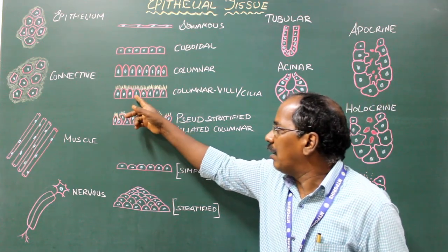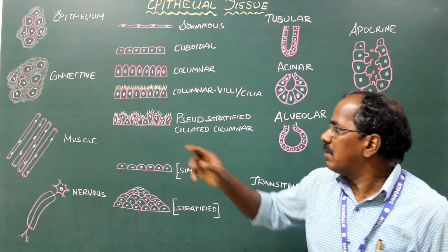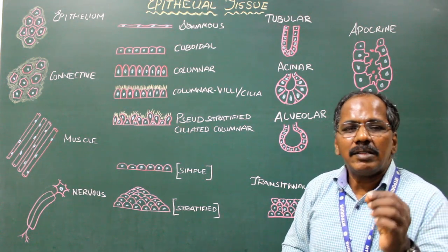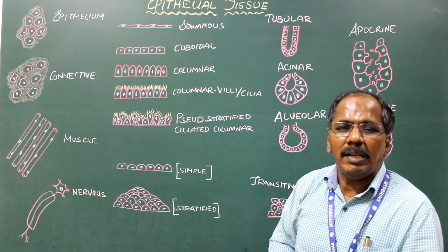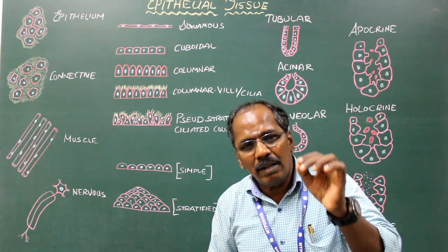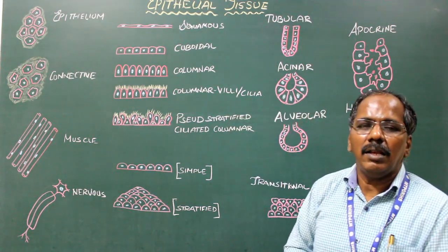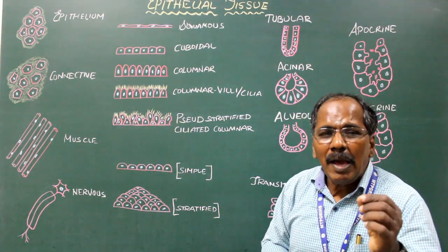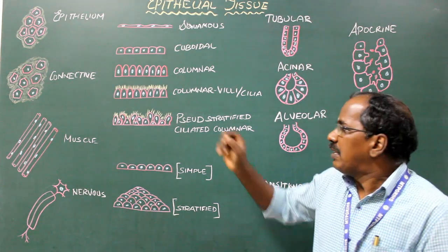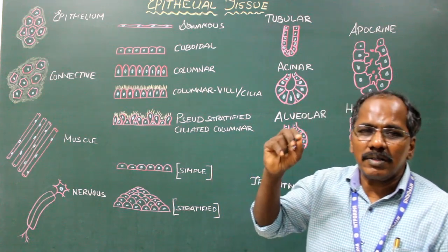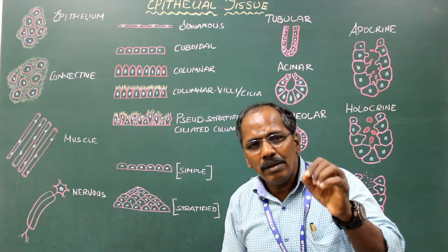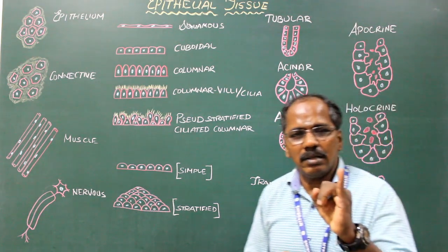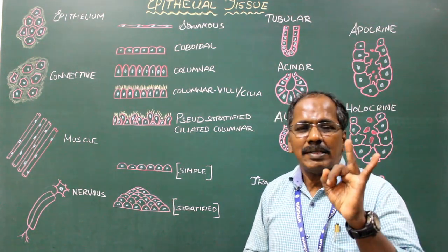Simple columnar epithelium characterized by the presence of villi on the surface is present in the small intestine and gallbladder. Simple columnar epithelium characterized by the presence of cilia — small hair-like projections on the surface — is known as simple ciliated columnar epithelium. Examples include the respiratory tract, uterine tube, and central canal of the spinal cord.